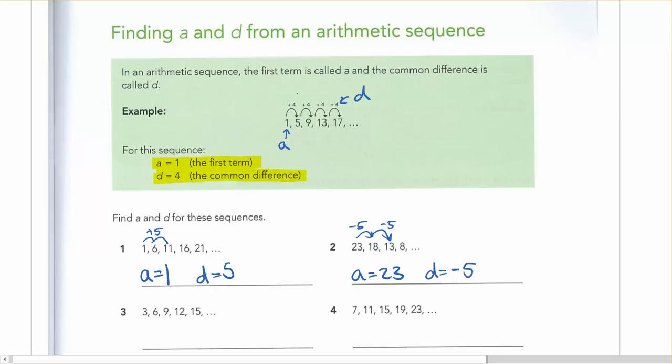So in this case, I have a positive 5 that's going up by 5. And in this one, it's going down by 5, so I say negative 5.